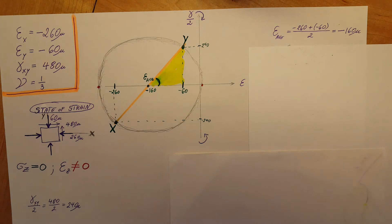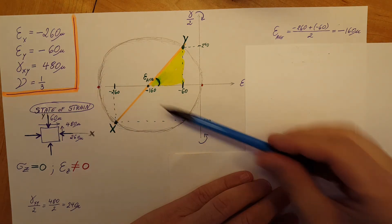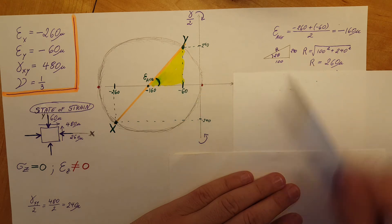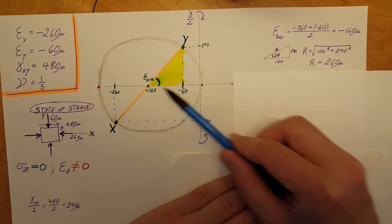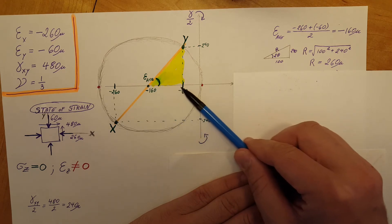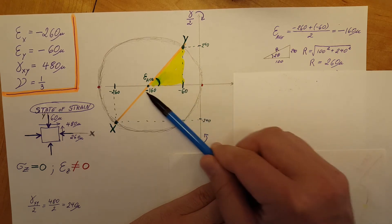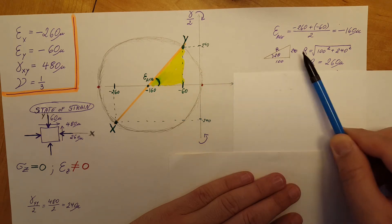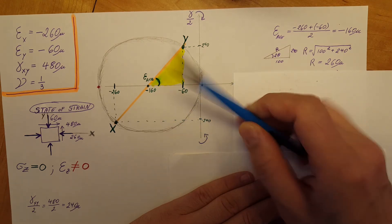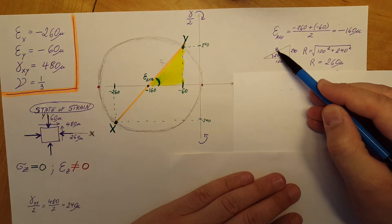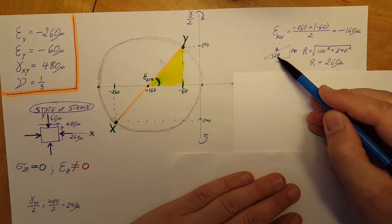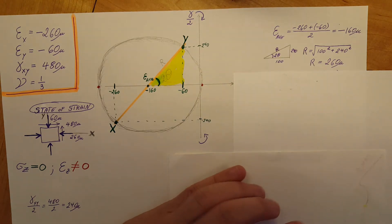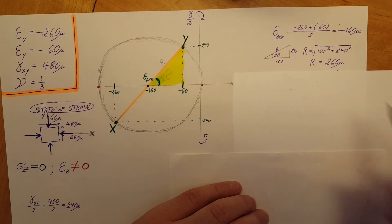Now we rely on trigonometry using the triangle highlighted here on the Mohr's circle. I'll redraw it separately to keep things clear. It's a right triangle: the horizontal side goes from negative 60 to negative 160, giving a length of 100; the vertical side is 240. The hypotenuse is our radius R. Remember that in Mohr's circle the angle we work with is 2-theta, not theta — so this is my 2-theta angle.